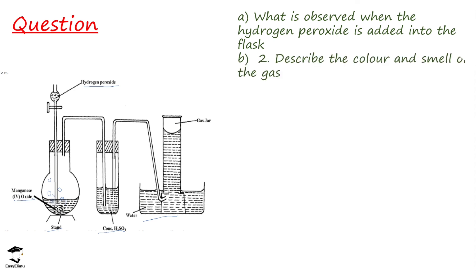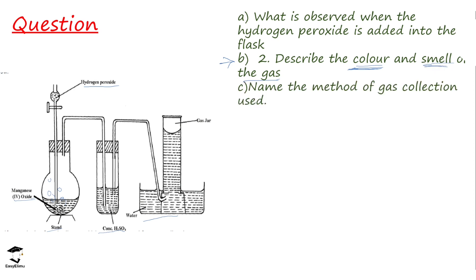Question 2 asks: describe the color and smell of the gas produced. This question is asking for the physical properties of oxygen. Oxygen does not have a color — it is colorless — and it has no smell — it is odorless. Question 3 asks: name the method of gas collection used. Looking at the diagram, the gas jar is inverted in a water bath, so this is called the over-water method.